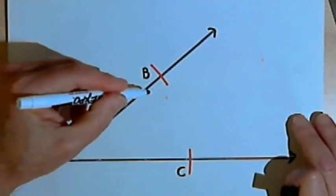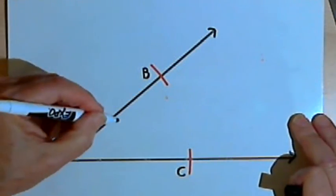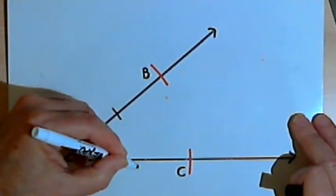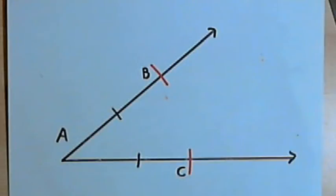And now what I've done is I've drawn two congruent line segments. Line segment AB is congruent with line segment AC, because I drew them both with the same compass setting.